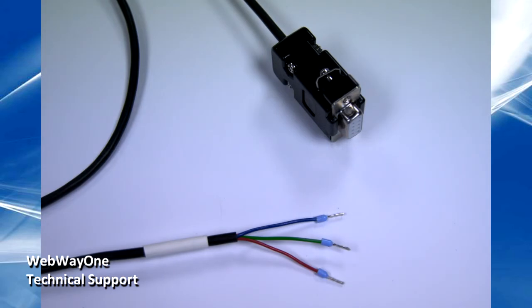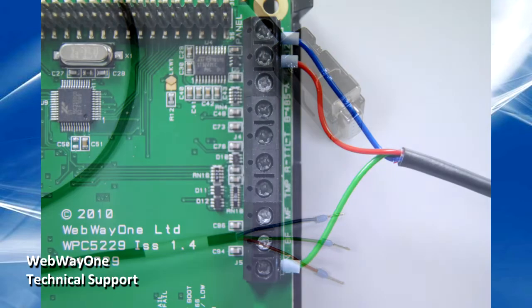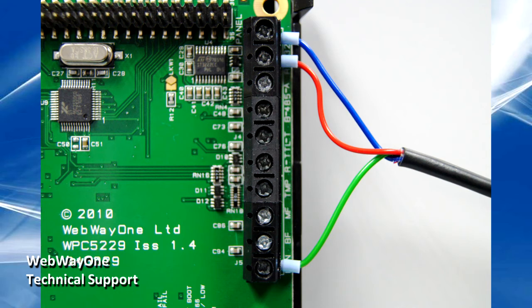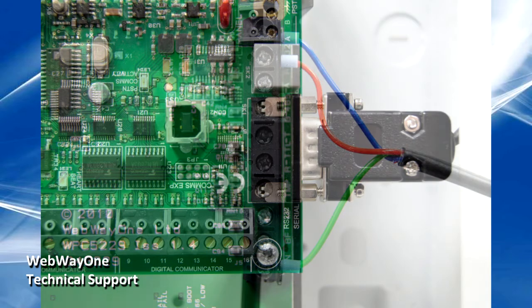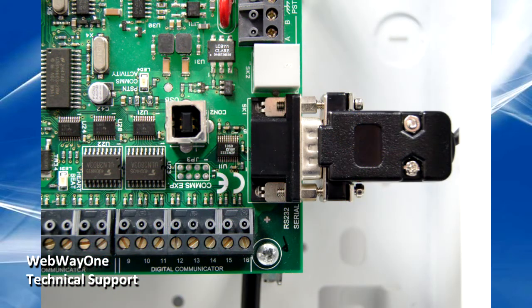Let's look at the physical wiring. The S-series mainboard assembly has a 9-way D-type connector at the top right. Webway can provide a special cable with the relevant connector to allow serial connectivity. On the Webway board, connect the green wire to the return terminal, the red wire to the 232 interface R terminal, and the blue wire to the 232 interface T terminal. Finally, connect the D-type to the 232 connector on the Scantronic.